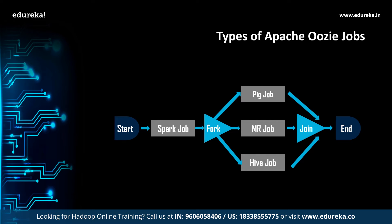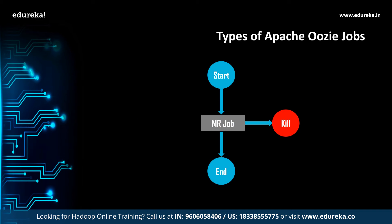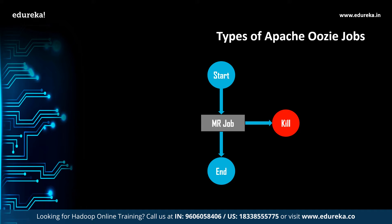The components used in this workflow are: start, MapReduce job, Pig job, fork, join, Hive job, and end. There are mainly three control flow nodes in the Oozie workflow: start, end, and kill nodes. The start node is first and the end node is last; in between we have a MapReduce program based on word count. If the MapReduce job encounters an error, the job is terminated using the kill node. If successful, control flows to the end node. Next, we deal with coordinators.